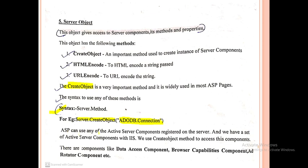ASP can use any of the active server components registered on the server, and we have to set the active server component with IIS — Internet Information Services. IIS is the most important service for running web applications, and it is hosted by default on our laptop or computer; we just need to activate it.